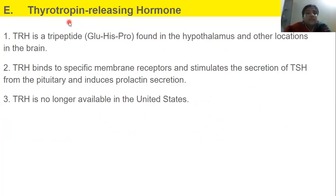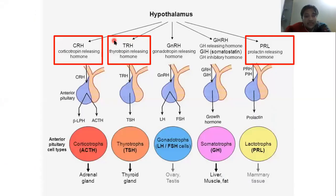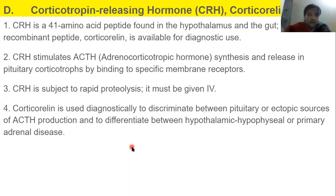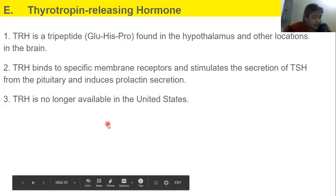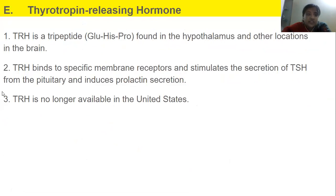Then we have thyrotropin releasing hormone. TRH will again activate the anterior pituitary gland, trigger the release of TSH, and that will activate the thyroid gland. TRH is a tripeptide found in the hypothalamus and other locations in the brain.